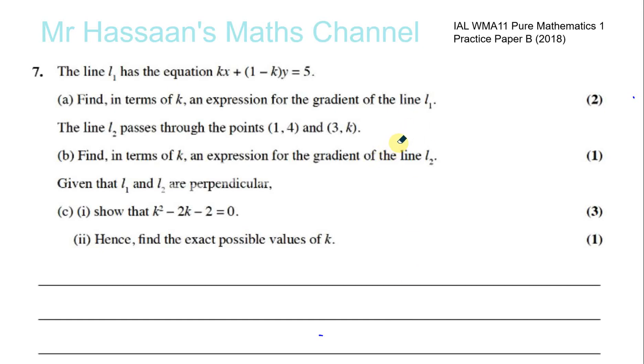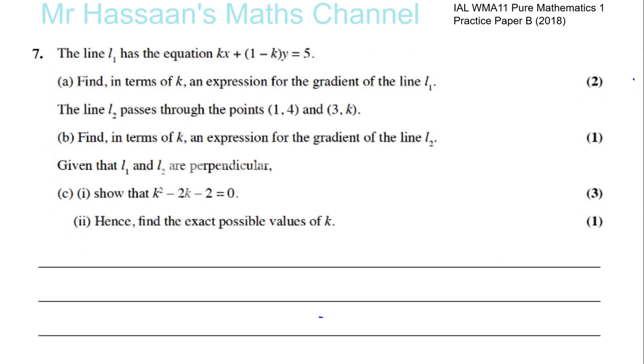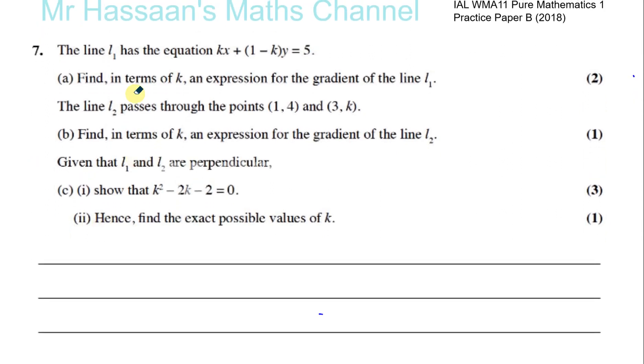Now for question number 7 from Pure Mathematics 1, practice paper B. We have a question about straight line graphs. So we're told that the line L1 has equation Kx plus (1 minus K) times Y equals 5. So that's the equation of line 1.